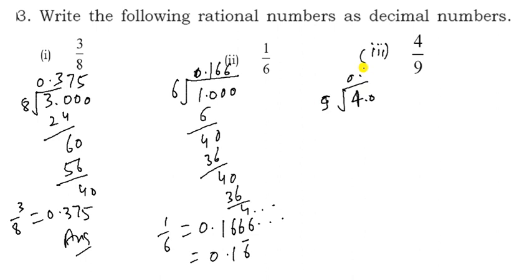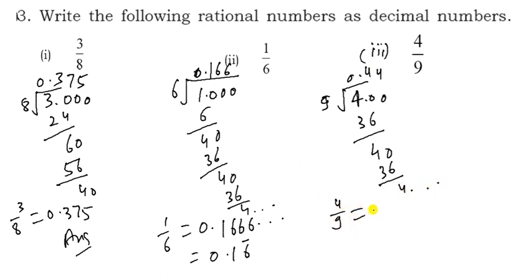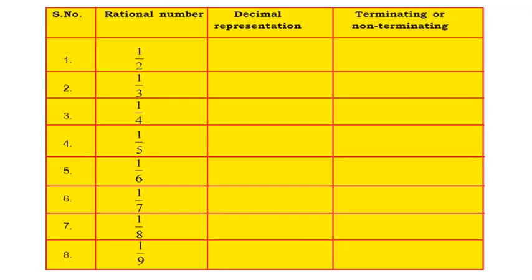For 4 divided by 9: place decimal. Nine 4s are 36, remainder 4. Bring down 0, nine 4s are 36 again, remainder 4, and so on. So 4 upon 9 = 0.444... written as 0.4 bar.